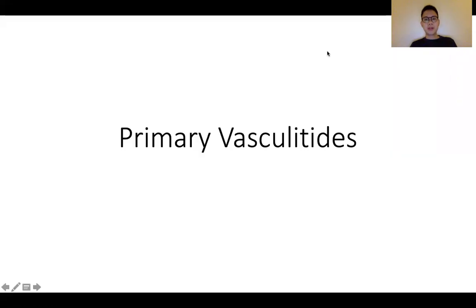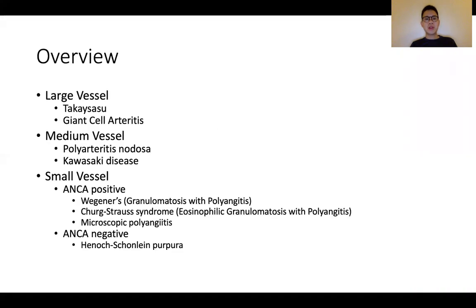Today we'll be talking about primary vasculitic disorders that can feature in the MRCP PACES exam, commonly in the Station 5 context, although this can also feature in Station 2 long case history taking. It's important to remember that vasculitic disorders can also be secondary to other connective tissue or autoimmune disorders, such as systemic lupus erythematosus.